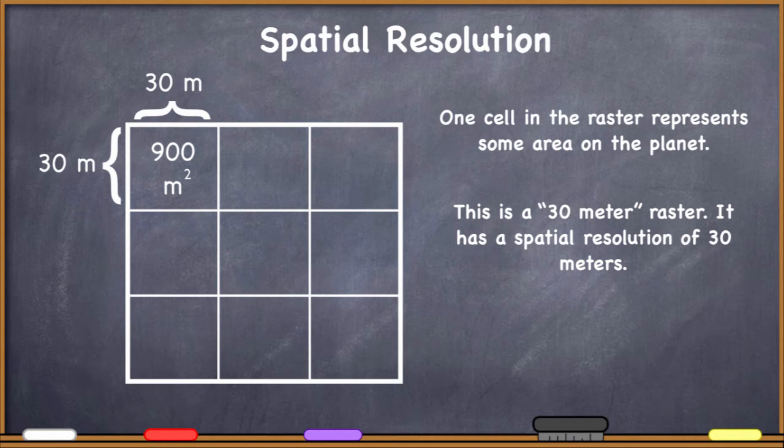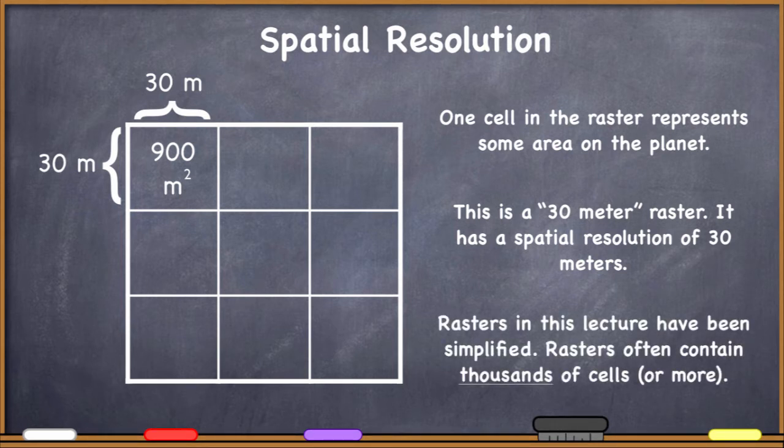Rasters do come in varying spatial resolutions, and that's why you have to be able to look that up or know where to find that information when you download a raster or otherwise acquire one. Or when you make one, it's important to include that information in the metadata when you exchange it with somebody else. I do want to note that all of the rasters that I'm showing you here in this video lecture have been simplified. I'm just going to be showing you a relatively small number of cells, larger so that we can see them and we can understand what's going on as far as their manipulation goes.